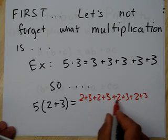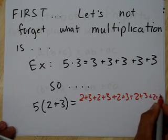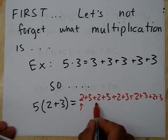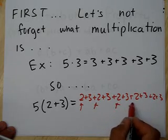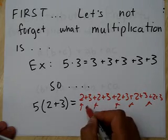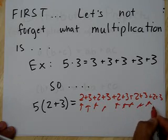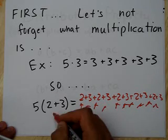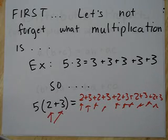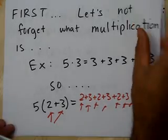You end up having five 2s and five 3s. So we get 5 of both of those — 5 of both of them.